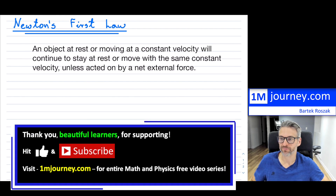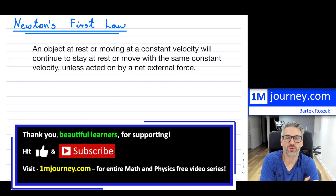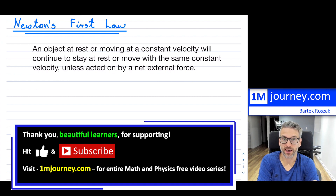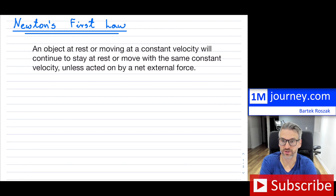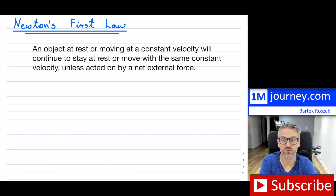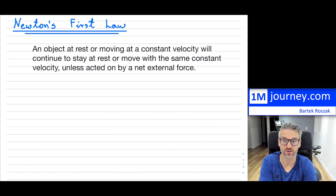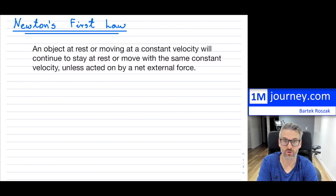Newton's first law. In this particular law, when you are just beginning and trying to understand it, when you read the law itself — it could be worded a little differently — it states: an object at rest or moving at a constant velocity will continue to stay at rest or move with the same constant velocity unless acted on by a net external force.